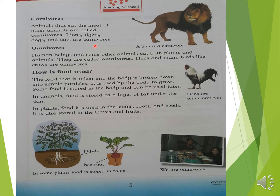Some animals eat both plants and meat — they are called omnivores. Hens and many birds like crows are omnivores.